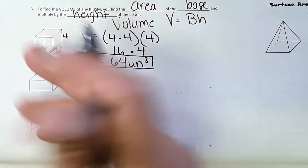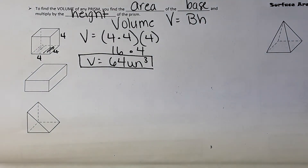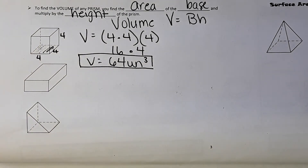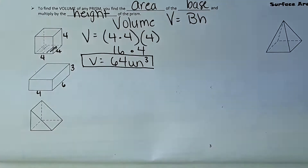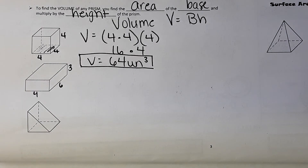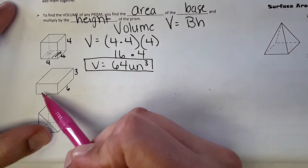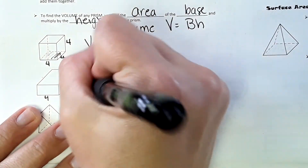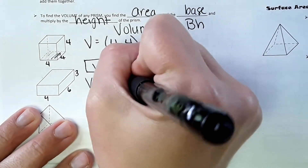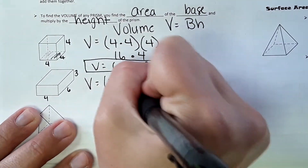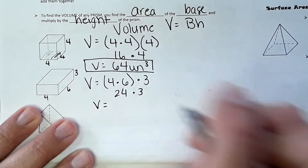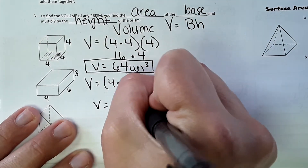For the next example, the dimensions are 4, 6, and 3. To find the volume, we need the area of the bottom rectangle: Volume = 4 × 6 × 3. The volume comes out to 72 units cubed.